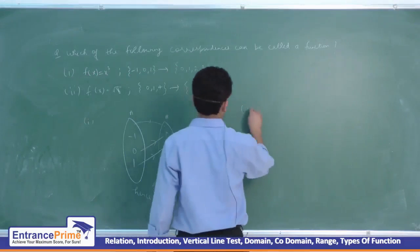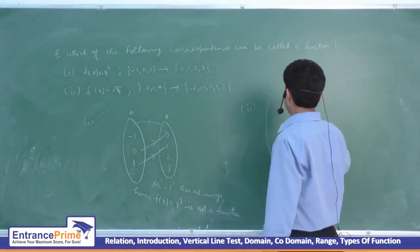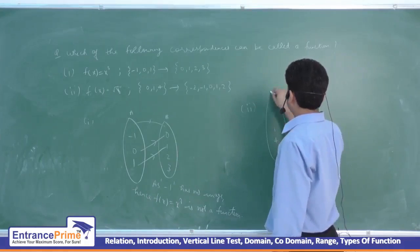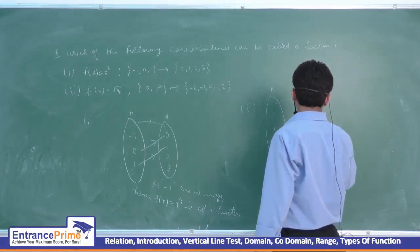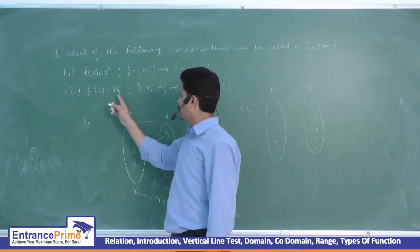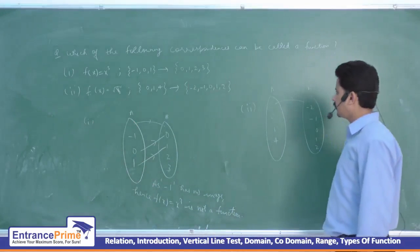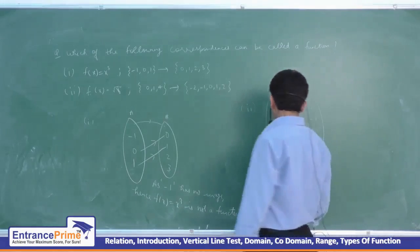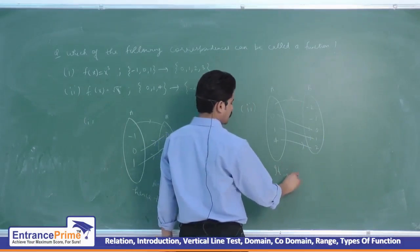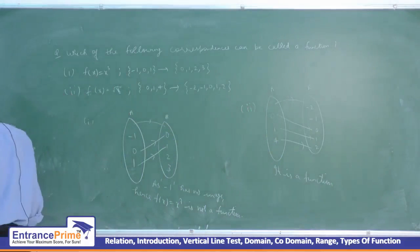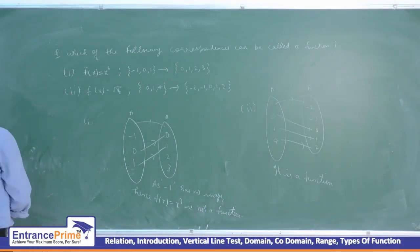Now let's check the next one. Set A contains 0, 1, 4 and set B contains minus 2, minus 1, 0, 1, 2. We put values from set A: when x equals 0, f(x) equals 0; for x equals 1, f(x) equals 1; and for x equals 4, f(x) equals 2. It is a function as each member of set A has an image and that image is unique. So this correspondence represents a function, as the definition of function is satisfied.